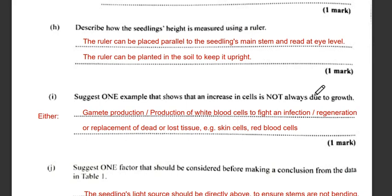The question asks how seedling height is measured using a ruler. The ruler can be placed parallel to the seedling's main stem and read at eye level. The ruler can also be planted into the soil to keep it upright.